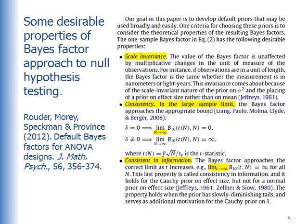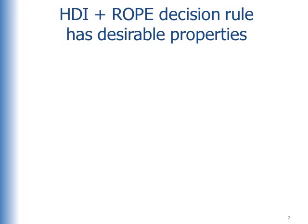There are some desirable properties of the Bayes factor approach to null hypothesis testing, pointed out by Rauter et al. in a 2012 article about Bayes factors for analysis of variance. There's the property of scale and variance, the property of consistency, and the property of being consistent in information. The HDI in ROPE decision rule also has those desirable properties.